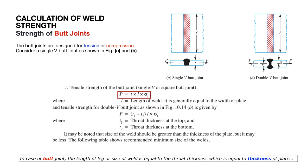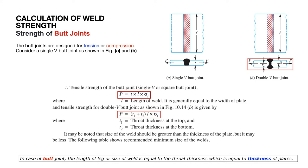The same approach applies to a double-V butt joint. For a double-V butt joint, there is an upper groove and a lower groove, each with their own thickness — t1 for the upper and t2 for the lower. The overall strength is: P equals (t1 + t2) multiplied by the length of the plate multiplied by the tensile strength σt.